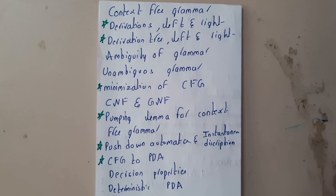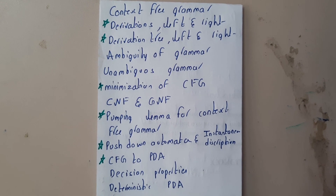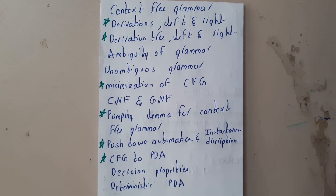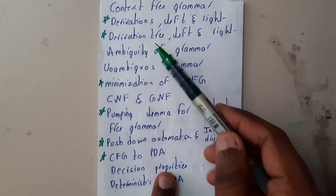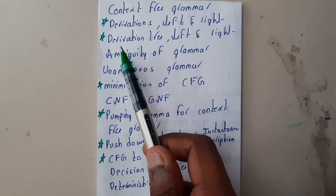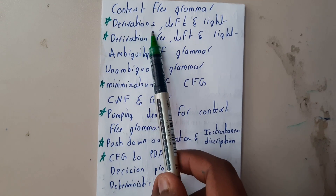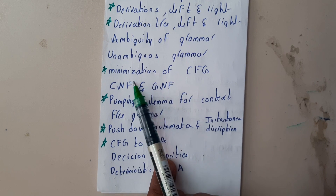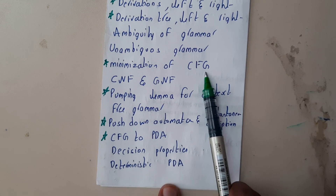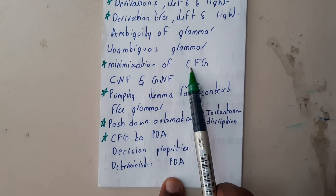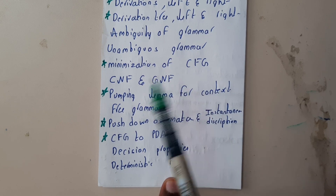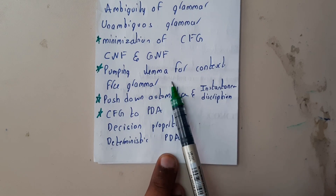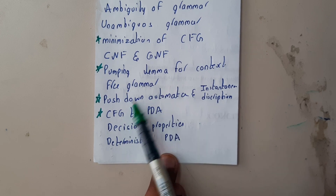The six marks, ten marks, or five marks problems are as follows: he'll be giving the productions and asking us to draw derivation trees — left and right derivation. Minimization of CFG — these are the three topics commonly asked in the second unit. In the third unit, pumping lemma questions will be asked. Pumping lemma also belongs to the second unit.